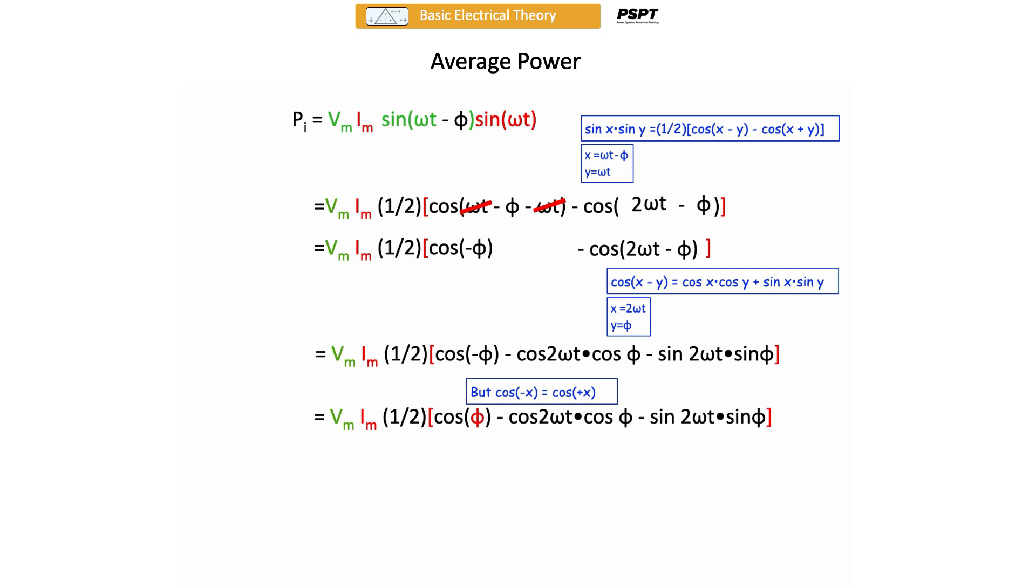And if we collect like terms and rewrite the equation, and the other thing to keep in mind is that cos minus x is equal to cos plus x. That's another trig identity. And we can rewrite the equation getting rid of the minus sign for the phi term in the first part of the equation. And the rest of the equation I'm just rewriting here. Now if I collect like terms, this is what I come up with. Vmim over 2 times the quantity 1 minus cos 2 omega t times cos phi, minus Vmim over 2 times sin omega t times sin phi.